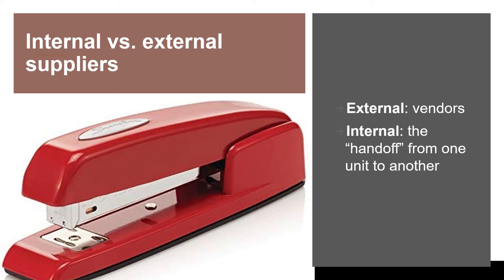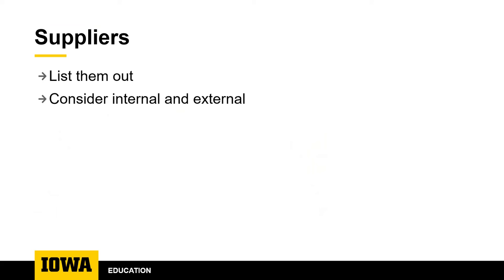Suppliers might also be internal. Consider, for example, instructors who have courses in a sequence in the same degree program. An instructor in a course early in the program might be considered a supplier for the instructor in the later course, by ensuring that students are prepared for that later course — handing off students from one course to the next. As you think about suppliers for your unit, a good first step is to simply list them out: who are they, what do they supply, and are they external or internal?